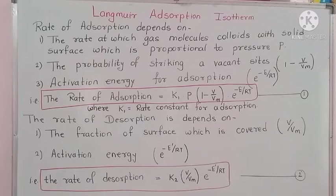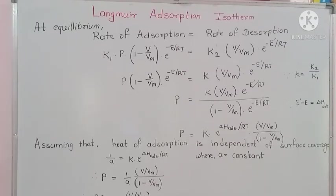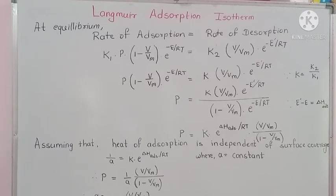At equilibrium, the rate of adsorption equals the rate of desorption: k₁ × P × (1 − V/Vm) × e^(−E/RT) = k₂ × (V/Vm) × e^(−E′/RT). After rearranging this equation, we get P = k × e^(ΔH_ads/RT) × (V/Vm) / (1 − V/Vm).